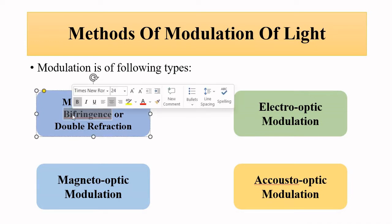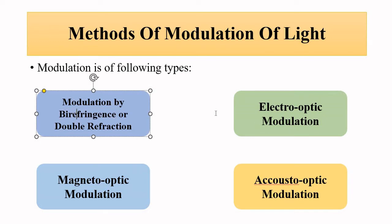Some commonly used external modulation techniques are: first, birefringence or double refraction, where a doubly refracting anisotropic crystal splits the ray into an ordinary ray and extraordinary ray, producing a phase shift. Second, electro-optic modulation, where an external voltage applies an electric field that changes the refractive index and produces a phase shift. Third, magneto-optic modulation, where an external magnetic field causes the plane of polarization to rotate by a certain angle.